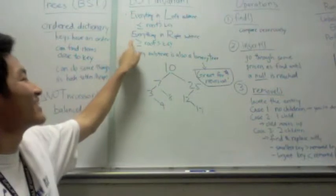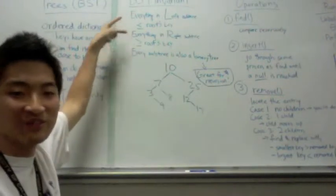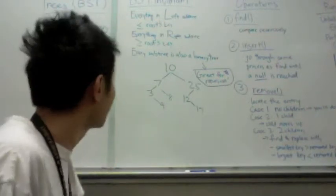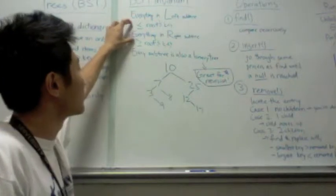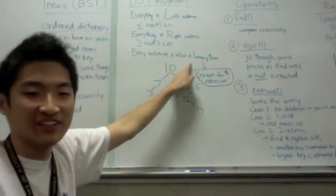But everything in the right subtree is greater than the root's key. These are the two very important properties of the BST invariant. And finally, because of this, every subtree is also a binary tree.